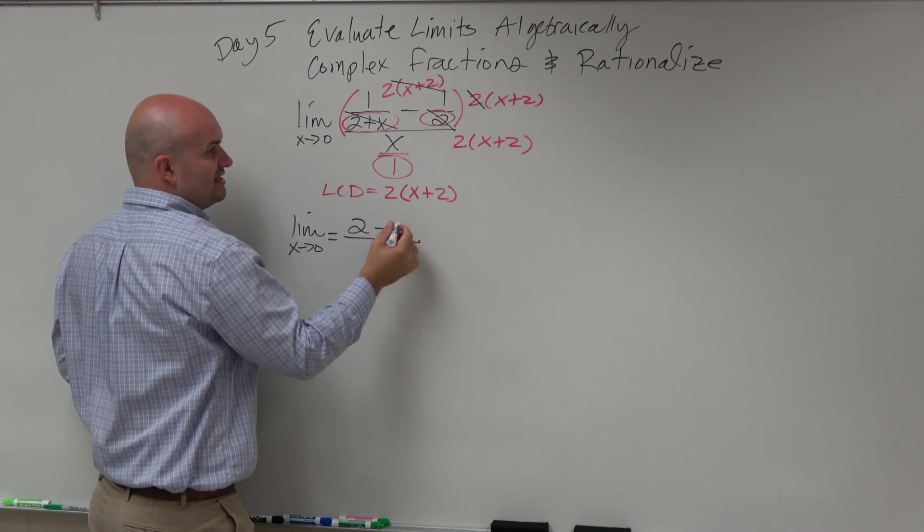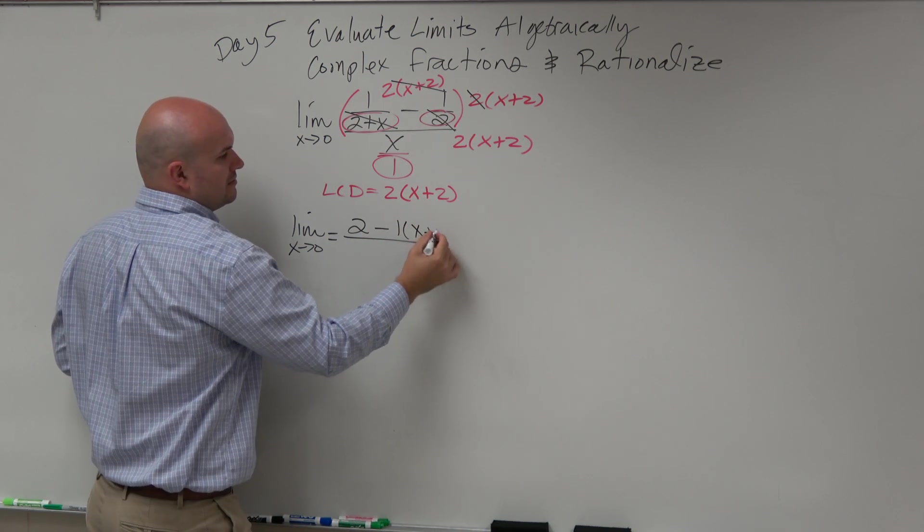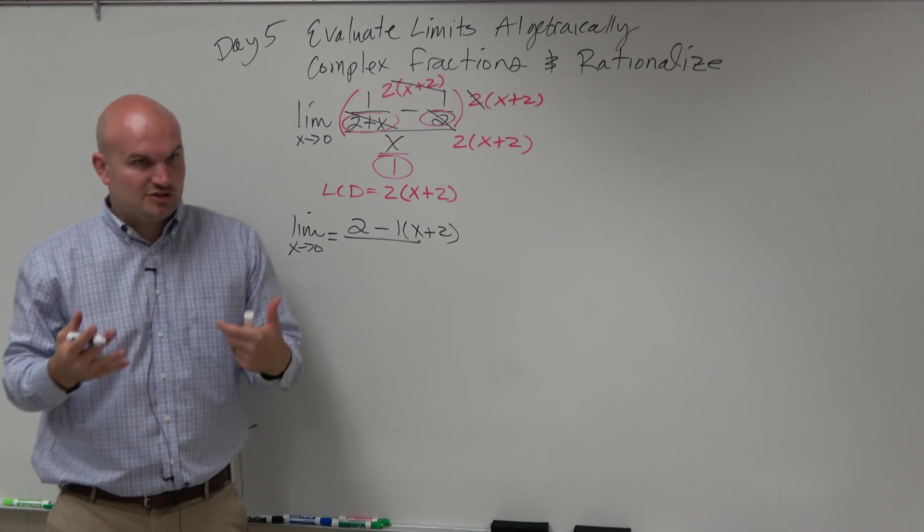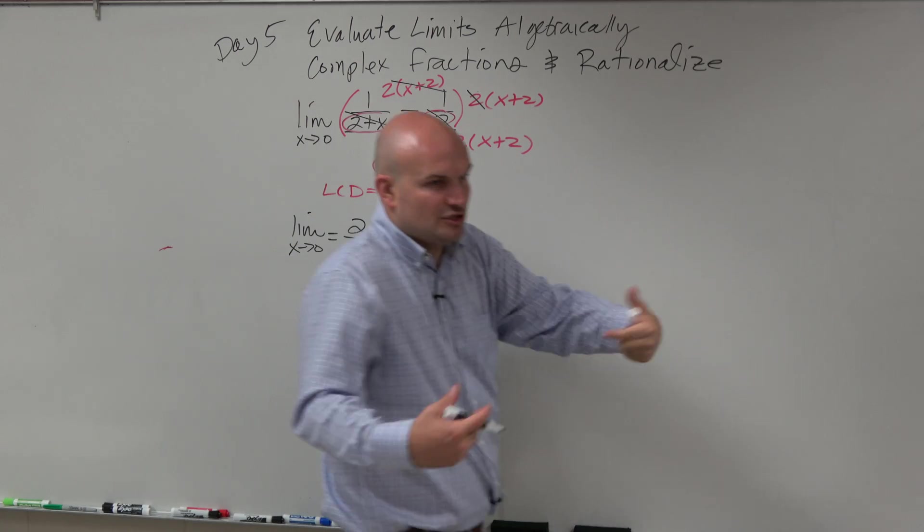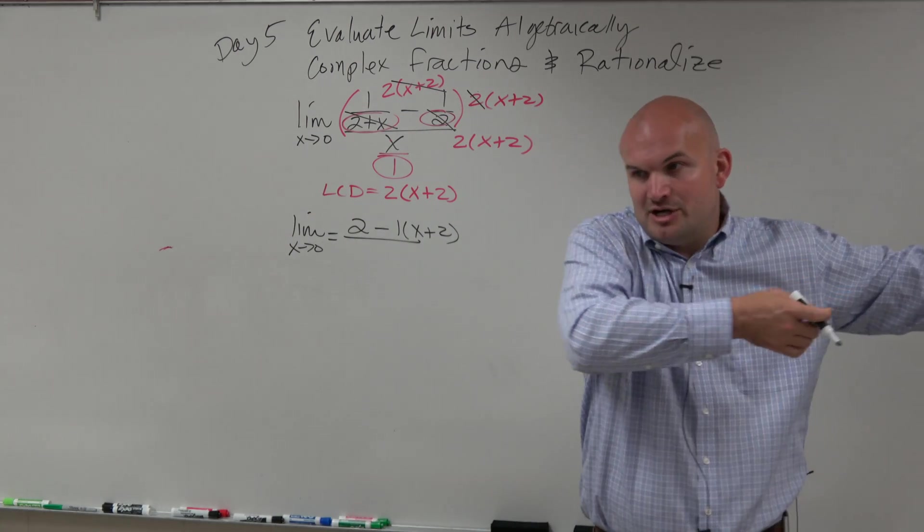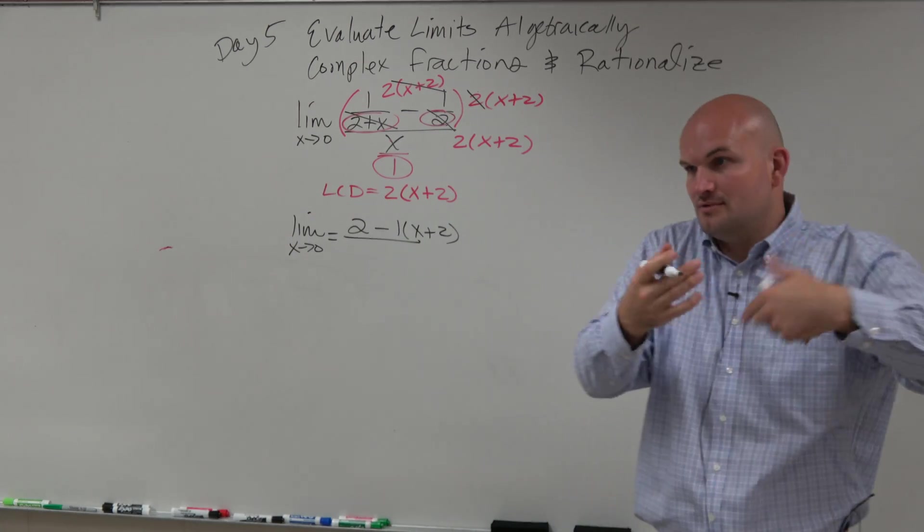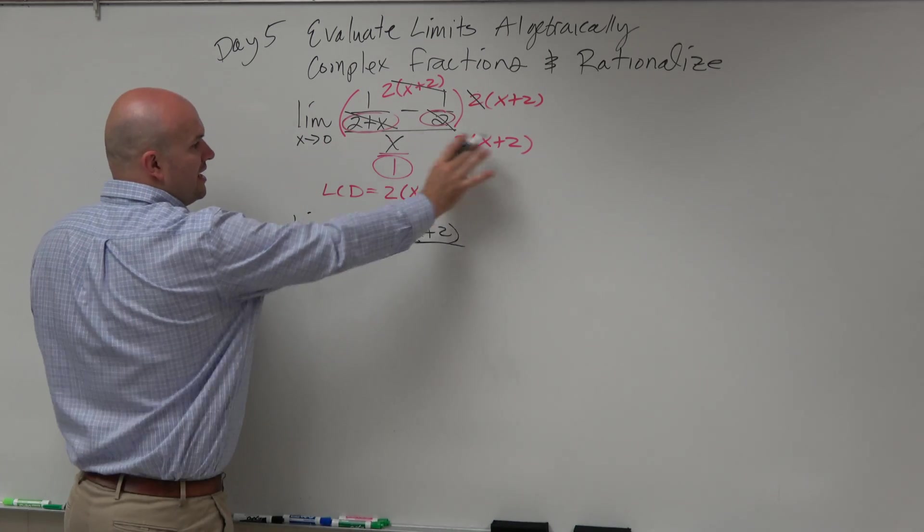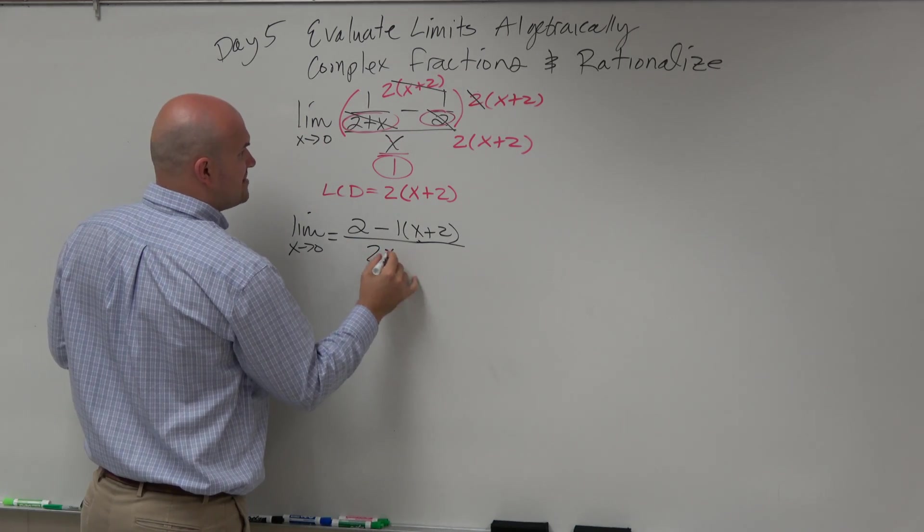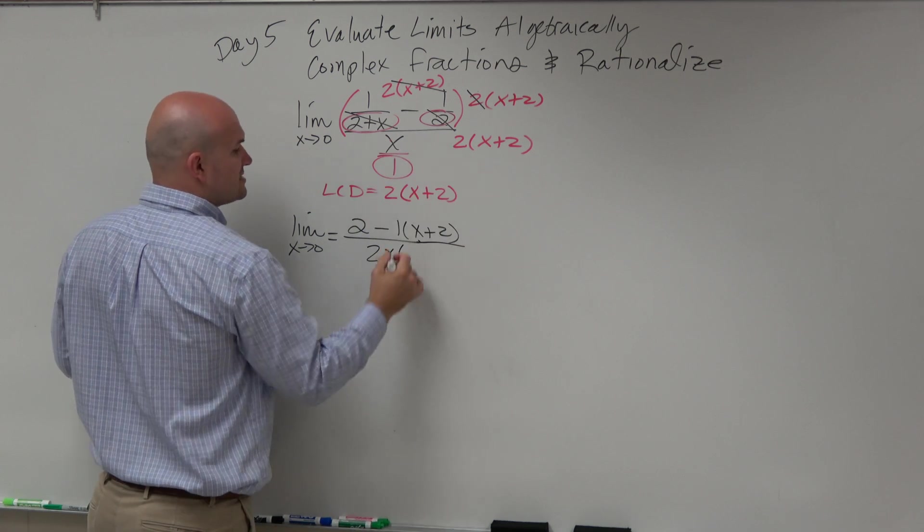And again, guys, if you do this correctly, your denominators are always going to divide out. Because by choosing the LCD, you're choosing numbers that your denominators divide into. So if you don't get rid of your fractions, then you obviously did something wrong. And then the denominator, I'm going to have 2 times x. 2 times x times x plus 2.